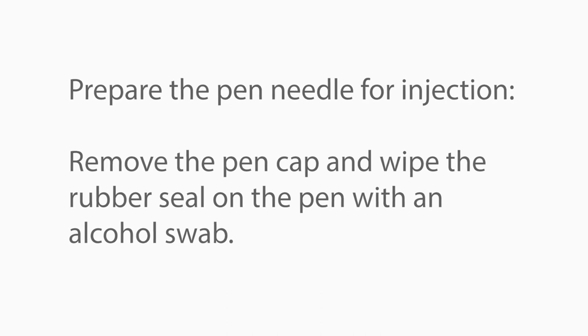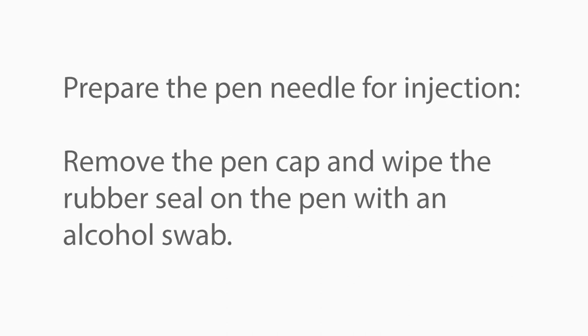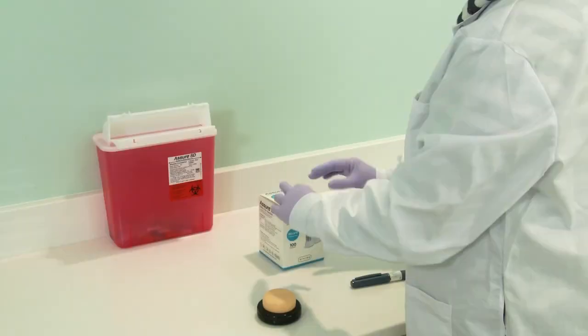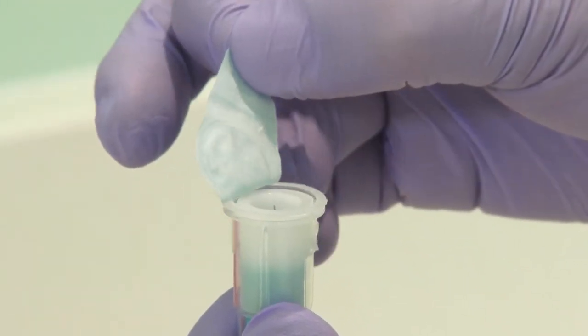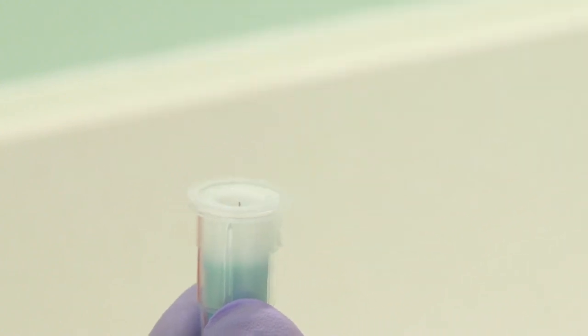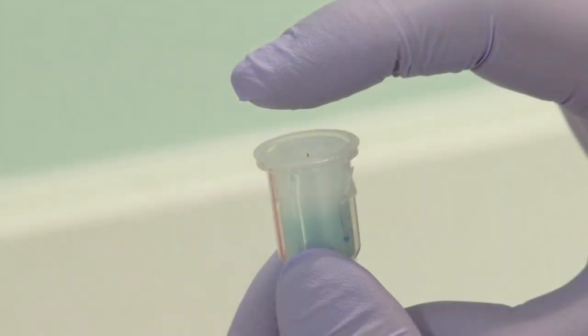Remove the pen cap and wipe the rubber seal on the pen with an alcohol swab. To attach the needle to the pen injection device, remove the seal from the safety pen needle by carefully peeling back the seal and discarding. For your safety, once the seal is removed, do not place fingers on the back end of the needle to avoid a needle stick.